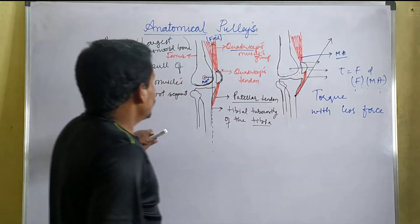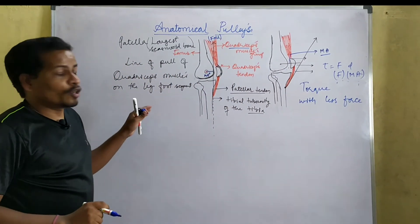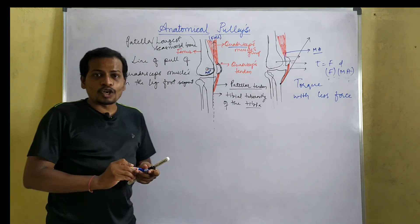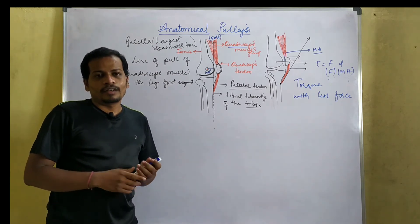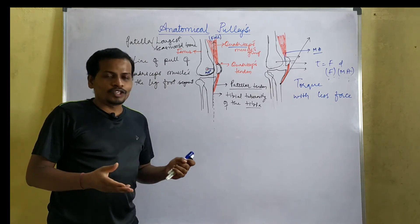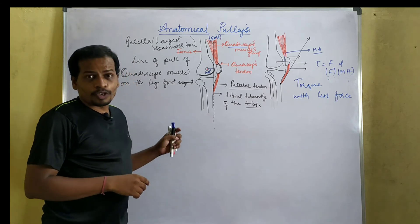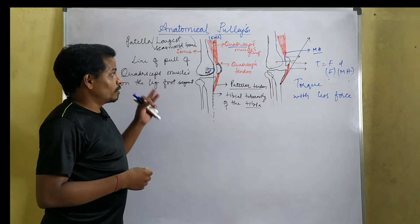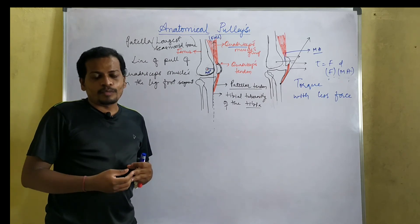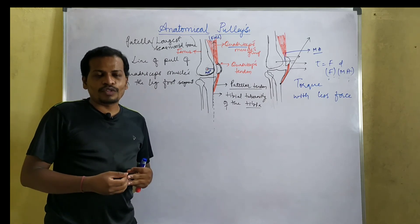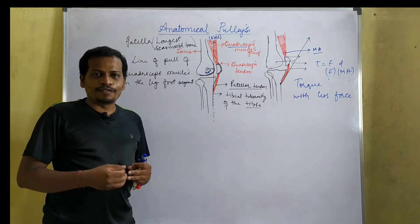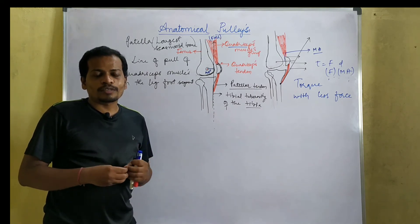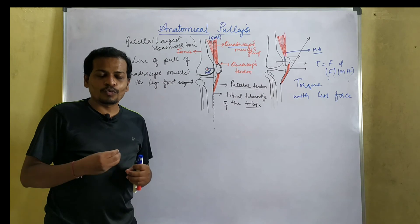This is the example of anatomical pulley with respect to the patella. To summarize: we studied the definition of anatomical pulleys, the example with respect to the humerus and acromion for the deltoid muscle, the example with respect to the patella for the quadriceps, and the functions of anatomical pulleys. If you like the video, please subscribe to the channel and watch the videos till the end.